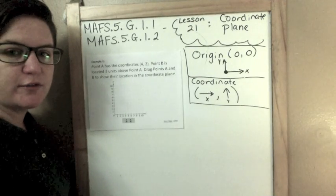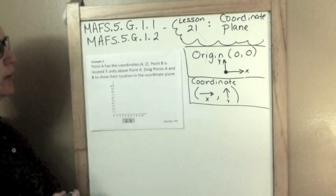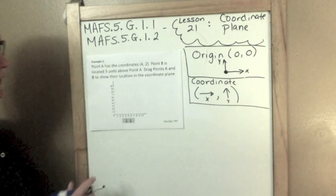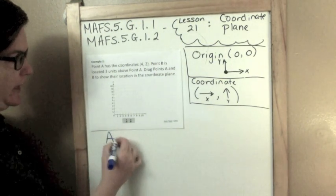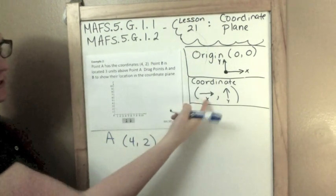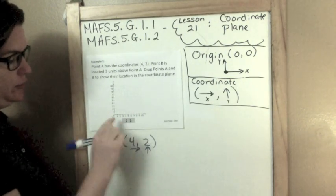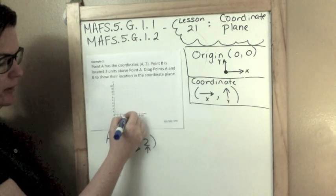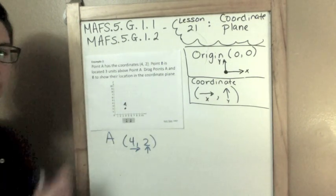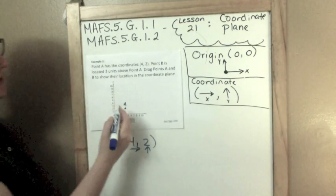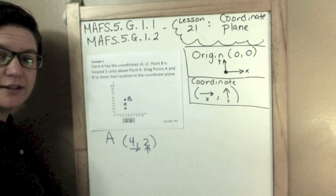Point A has the coordinates four, two. Point B is located three units above point A. Drag point A and point B to their location on the coordinate grid. So they would be down here, and you just click them and you would put them on the grid. So we know that point A is at this coordinate. And I said that we were going to go over four and then up two. So here's the x-axis. We're going to go over four and then up two. That would be right here. And this would be A. And point B is three units above that. So here's A. So one, two, three. That would be B right here. That's all you need.